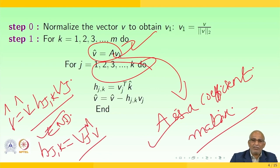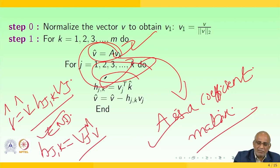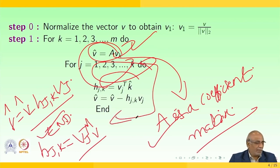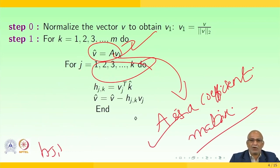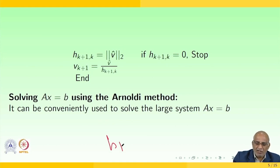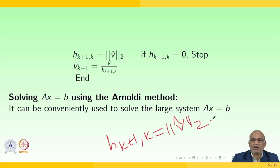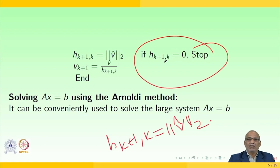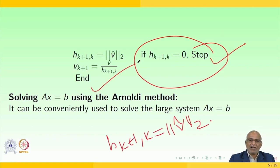For i = 1, 2, ..., m: set V̂ = A·V and perform the orthogonalization. Then set h(k+1, k) = ‖V̂‖₂. If h(k+1, k) equals zero, you cannot divide by zero, so you stop. Otherwise, go back to the loop and continue. This is the typical Arnoldi algorithm.